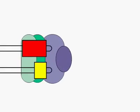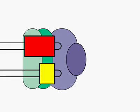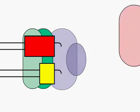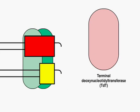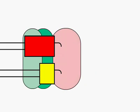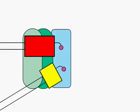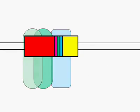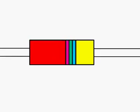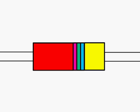The DNA hairpins at the ends of the gene segments are then cleaved. An additional enzyme, terminal deoxynucleotidyl transferase, or TDT, is recruited and adds additional nucleotides to the ends of the DNA strands. The other enzymes in the complex ligate together the two ends of the gene segments, completing the recombination process.